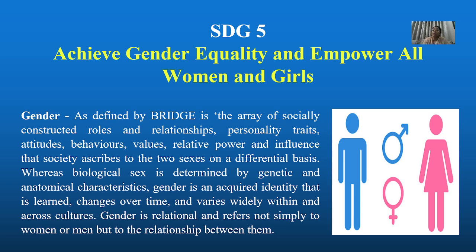What is gender? As defined by BRIDGE, gender is the array of socially constructed roles and relationships, personality traits, attitudes, behaviors, values, relative power and influence that society ascribes to the two sexes on a differential basis. Whereas biological sex is determined by genetic and anatomical characteristics, gender is an acquired identity that is learned. It changes over time and varies widely within and across cultures. Gender is relational and refers not simply to women or men, but to the relationship between them.